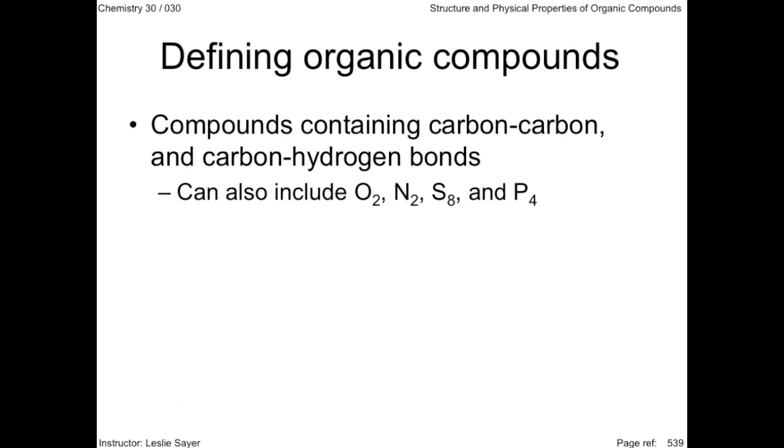So organic compounds are compounds that contain carbon-carbon and carbon-hydrogen bonds. They can also include oxygen, nitrogen, sulfur, and phosphorus. And some synthetic organic compounds contain halogens, elements from group 17 on your periodic table.